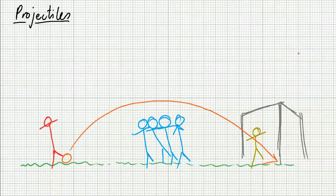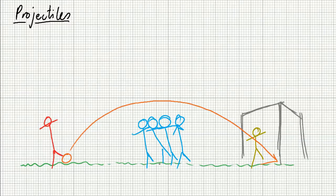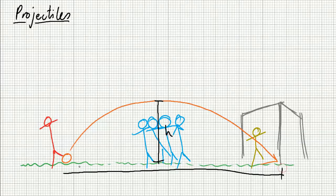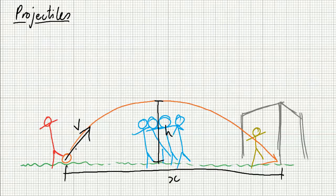We're going to talk about projectiles in this video. I'm going to give you a little context first. This is United here — they're trying to score a free kick against this horrible baby blue team. They need to get the ball a certain height so that it beats the wall, and we want it to nestle in that bottom corner, which obviously depends upon this distance here, distance x. Everything in this you can work out if you know the velocity with which the ball is kicked and the angle from the horizontal, angle theta, at which it is kicked.